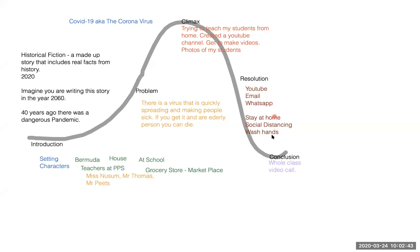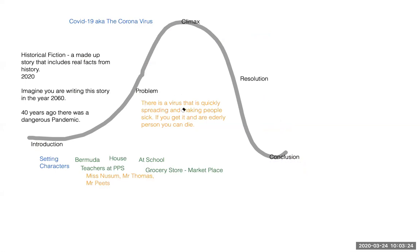Now we come to the conclusion. How are you going to end your story? A historical fiction story is something that is made up, so I want to include something imaginary at the end — and it might not really happen, which is okay. My conclusion is that I would like for the whole of my class to do a great big video call — everybody's going to be at home waving at the camera, and that's how my story ends. I want to show you how you can come up with your story mountain, and then you can see how easy it is to plan it.